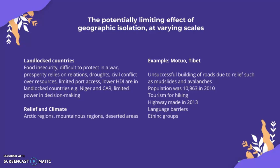Isolation can also be due to relief and climate. Arctic regions, mountainous regions, and desert areas tend to be quite isolating. An example is Motuo in Tibet — a mountainous and cold area that has been unsuccessful in building roads due to relief and natural occurrences such as mudslides and avalanches. Its population was just 10,963 in 2010. There is some tourism for hiking but it's not major. A highway was made in 2013 but has many limitations due to climatic conditions, and language barriers persist due to ethnic groups with limited exposure to globalization.